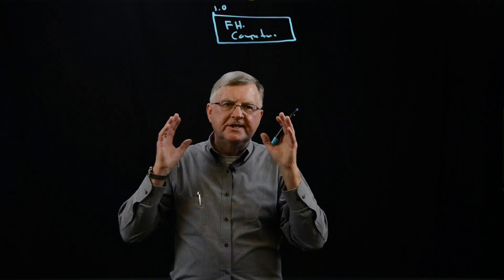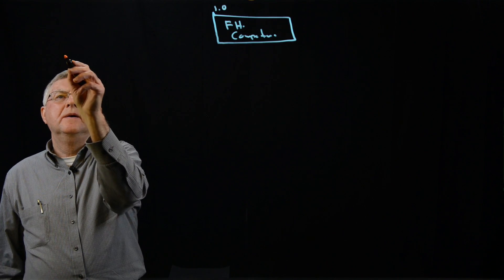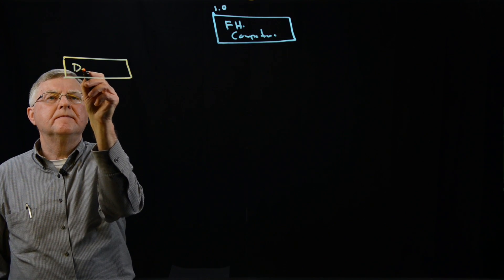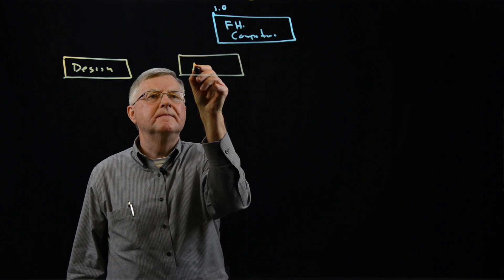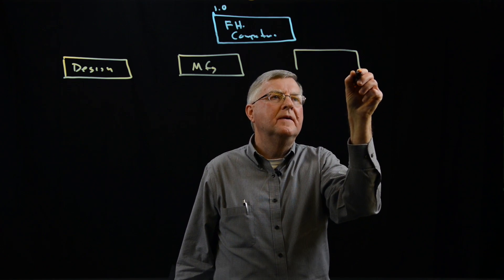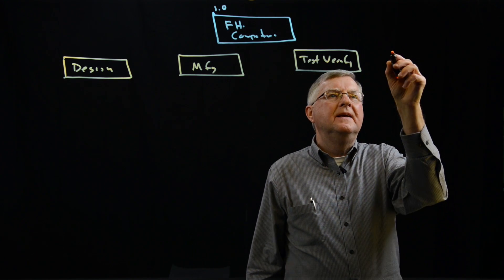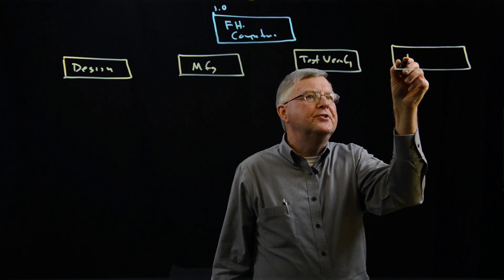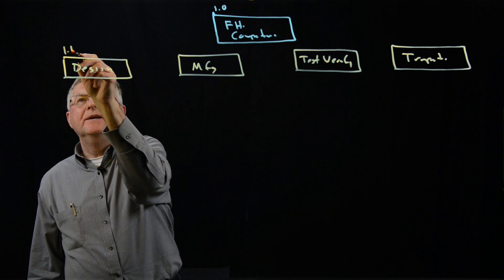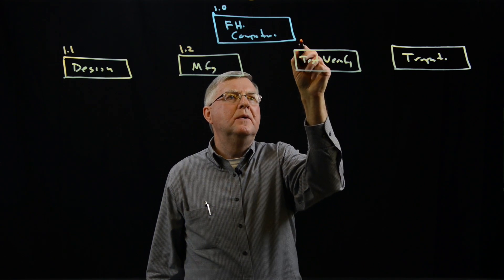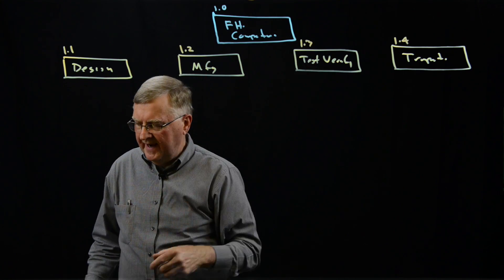There were four major segments of the competition identified by the project manager. One is design, the other is manufacture, the third is test verification, and the fourth is transport of the vehicle to the competition. We identify these as items 1.1, 1.2, 1.3, and 1.4 — still very general areas of the project, certainly not areas we can begin to assign resources or plan to.